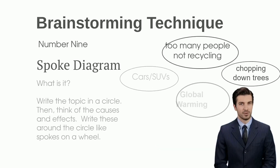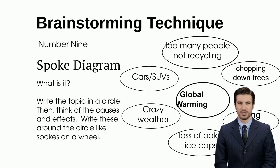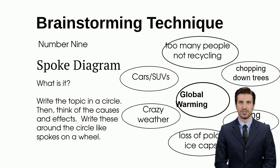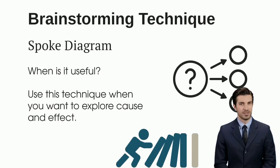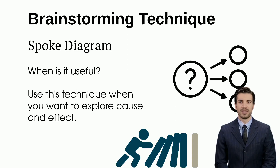In a spoke diagram, you place the main topic within a circle and then brainstorm causes and effects, arranging them around the circle like spokes radiating from a hub. The spoke diagram is a method employed when you aim to delve into the relationships of cause and effect.